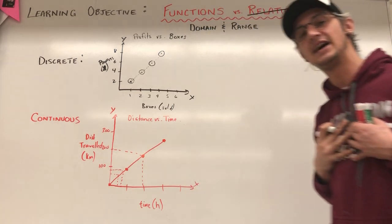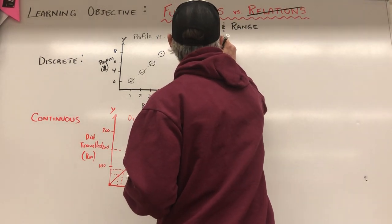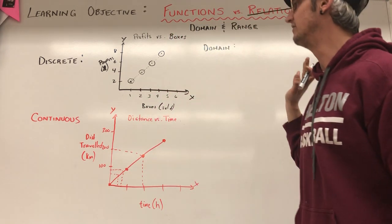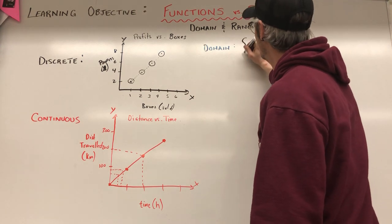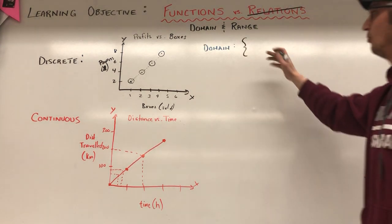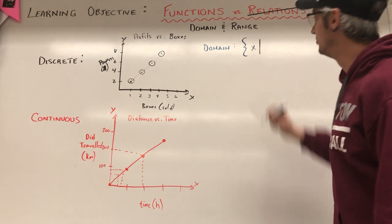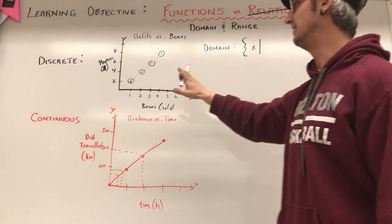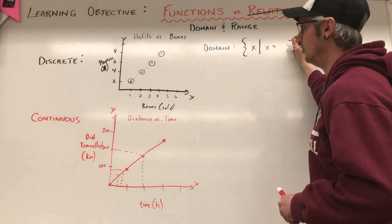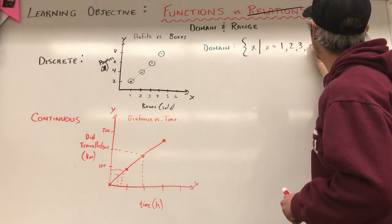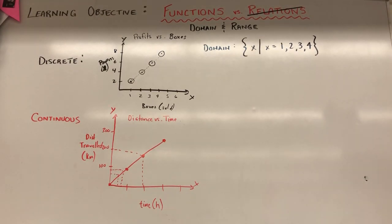Now let's introduce domain and range. The domain is: what values of x does my function exist for? Here's how we represent domain — open brace, then x, then a vertical bar which means 'such that.' For the discrete cookie-box graph, x can only exist at the specific data points: one, two, three, and four. So we write: x such that x equals one, two, three, four. Close the braces — that's my domain.